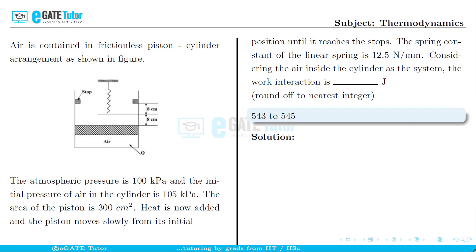This question is from thermodynamics for two marks. Air is contained in a frictionless piston cylinder arrangement as shown in the figure. The atmospheric pressure is 100 kilopascals and the initial pressure of air in the cylinder is 105 kilopascals.